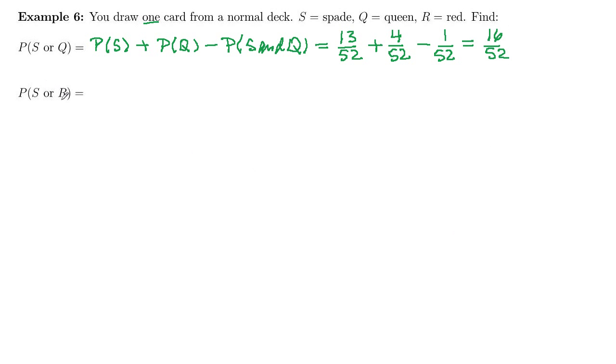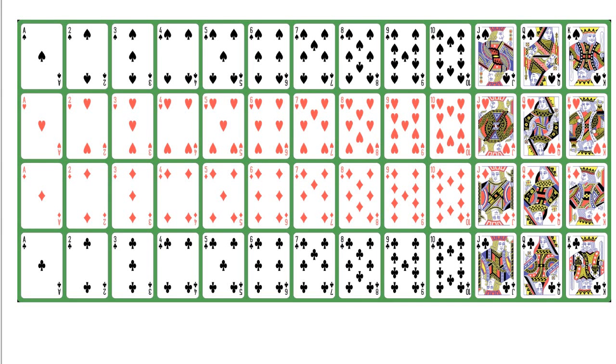Probability spade or red. Let's take another look. Our spades are these 13 cards here in the first row. Red cards are the next two rows, so that's 26 cards. There's no overlap between the spades and the red cards.